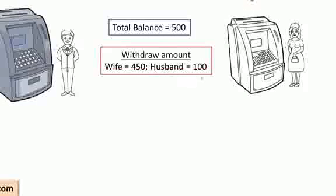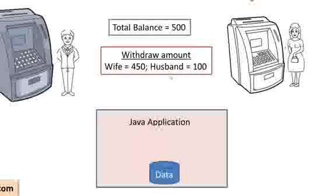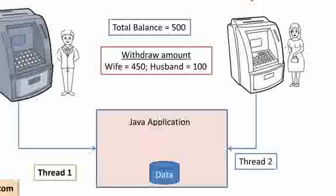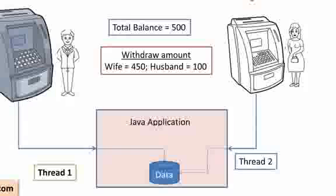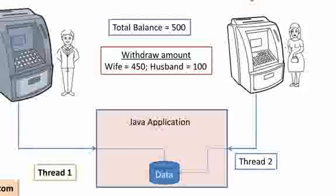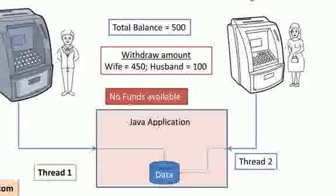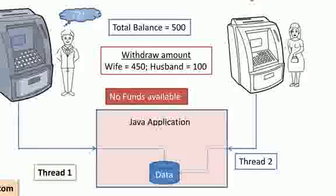Think that both of them are trying to withdraw the amount at the same time, and these two requests are being sent to the application, with two threads handling it — thread 1 and thread 2. They are trying to access and manipulate the data at the same time. So, if the wife's transaction goes ahead a little further than the husband's transaction, the husband will get a message saying no funds available, and he will be really confused about why the funds are not available, because at the start of the transaction he would have seen the balance as 500.